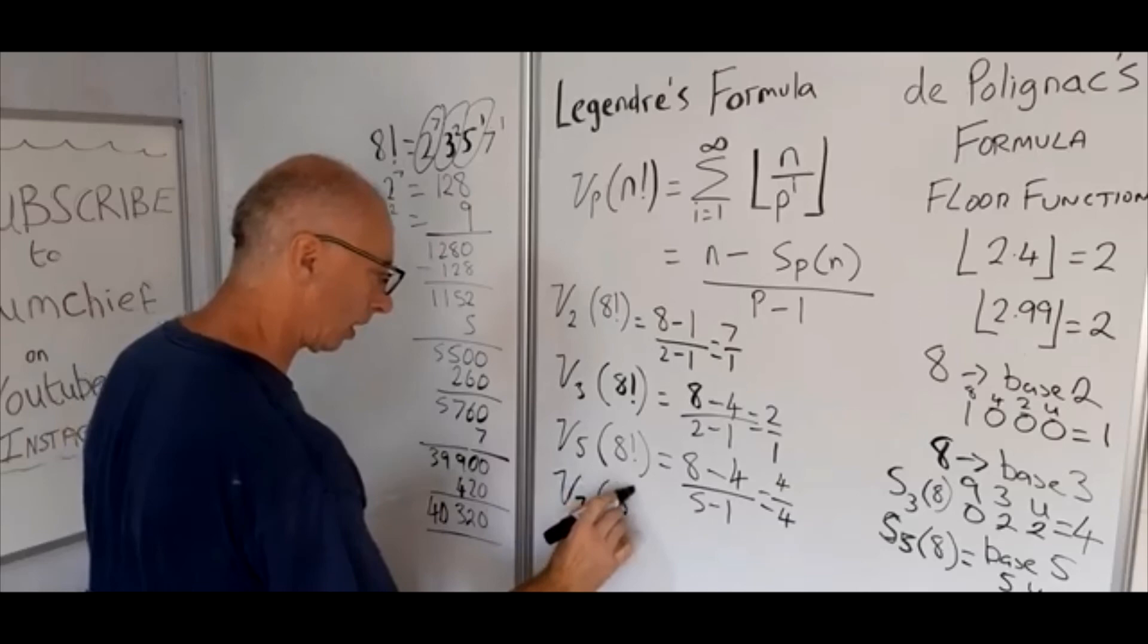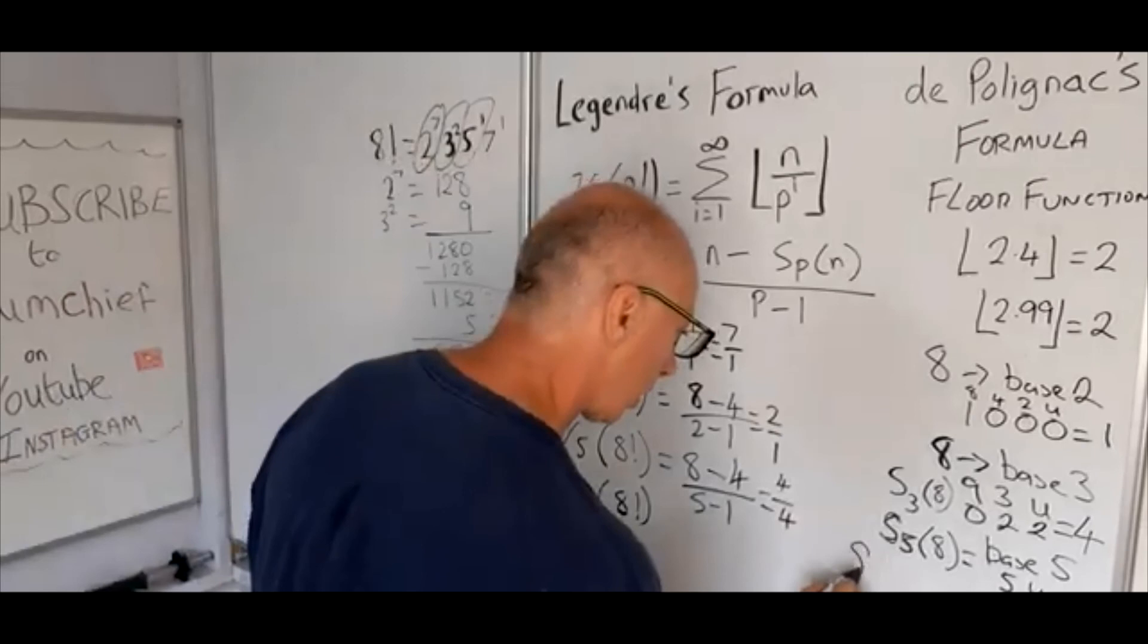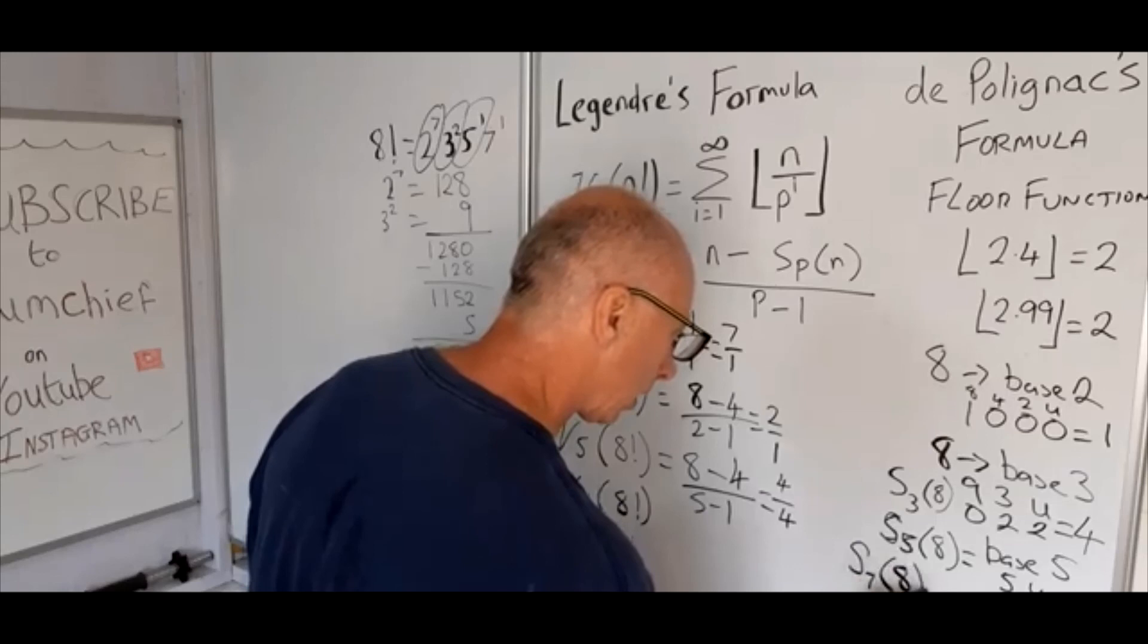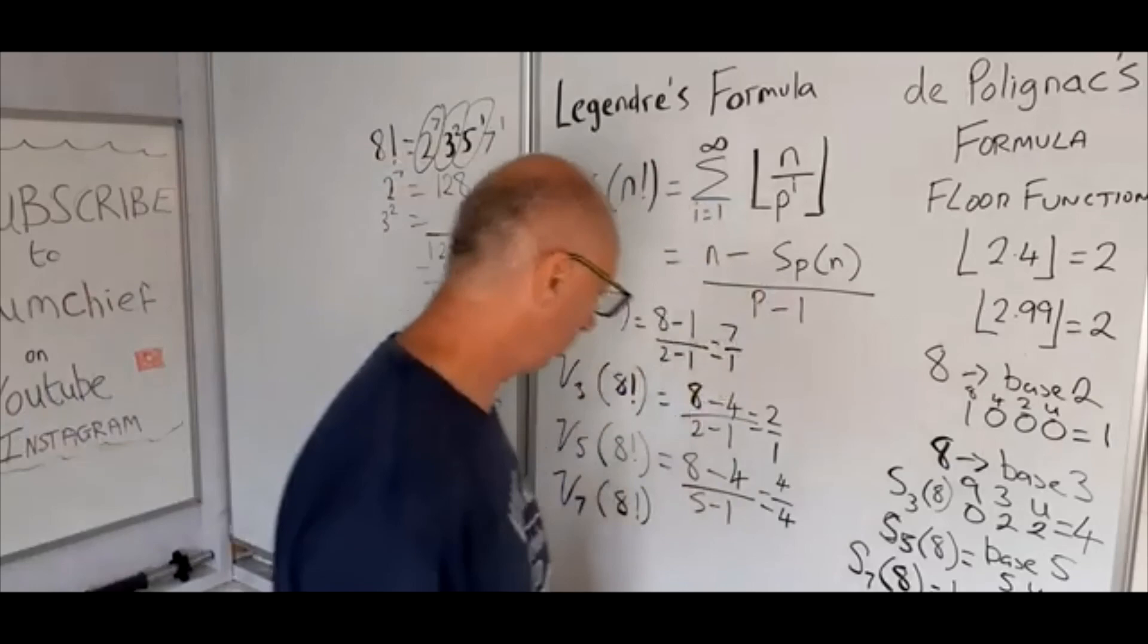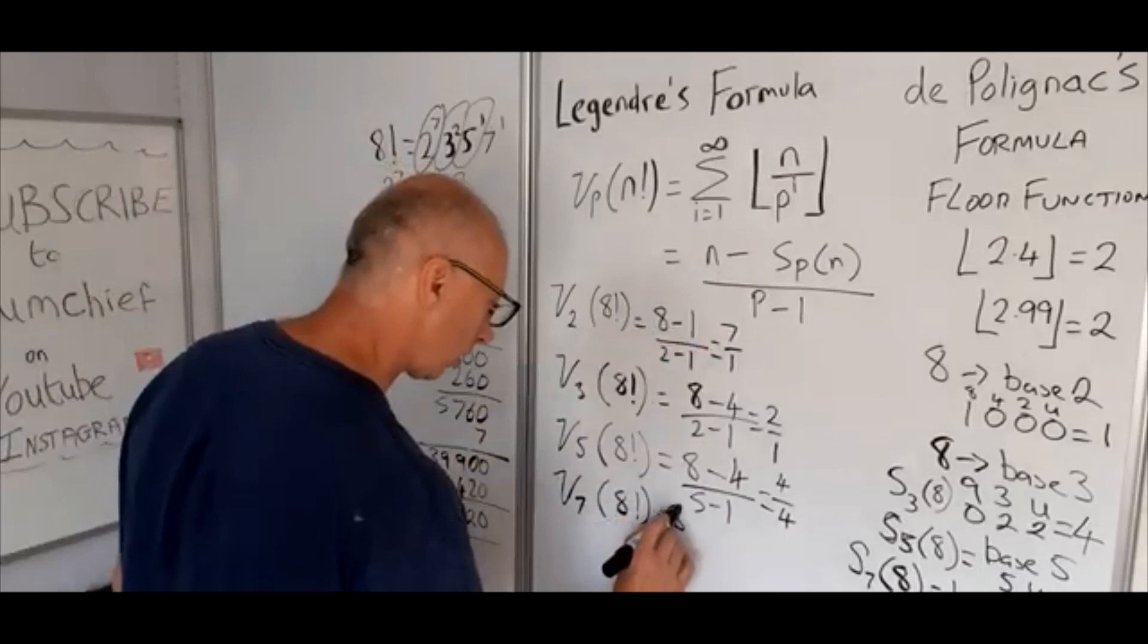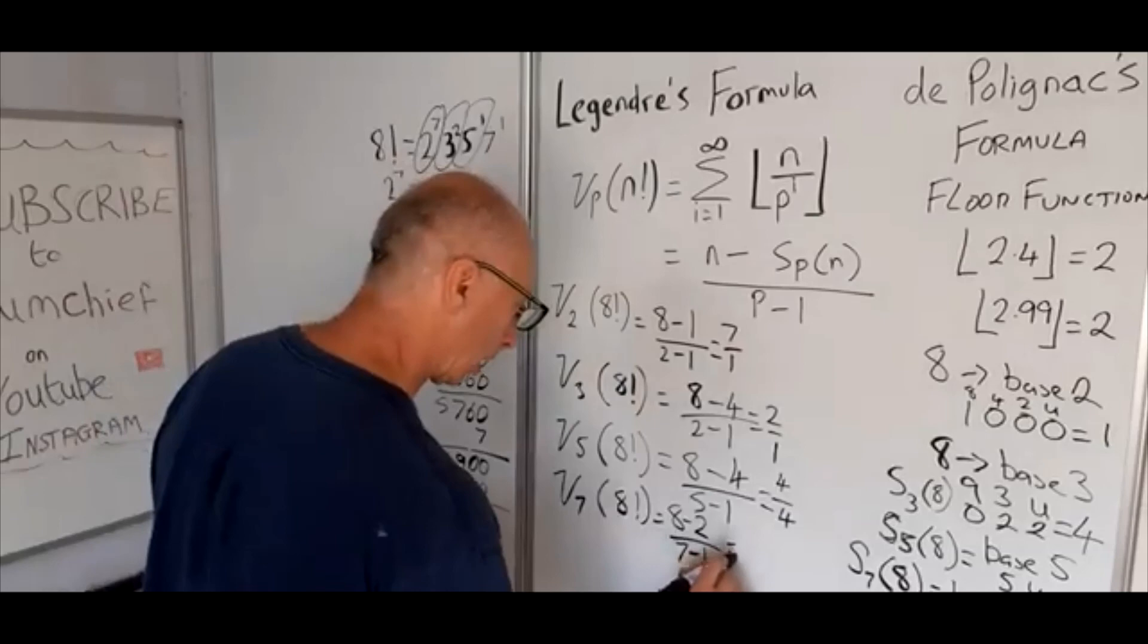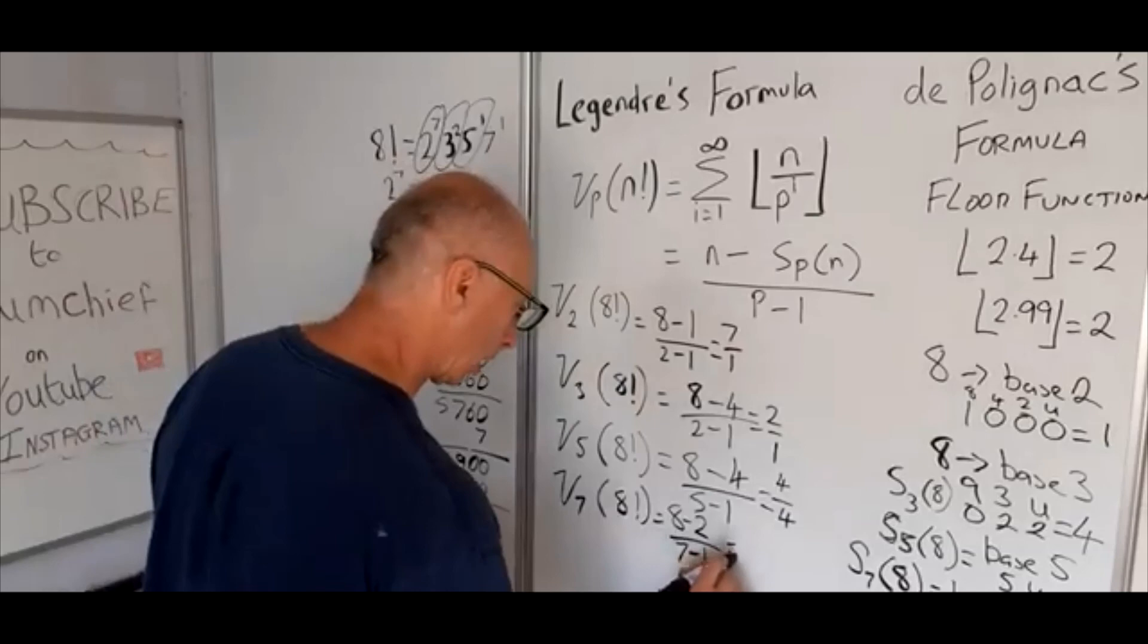And let's just try again for the last one. P-adic formula for 7, 8 factorial. S base 7 of 8. So base 7: 7 and units. So 8 is just going to be 1 seven and 1 unit, so that equals 2. So that's going to give us 8 minus 2 over 7 minus 1. And look, that gives us 6 over 6, which is 1. So that's going to be around and check, that works!